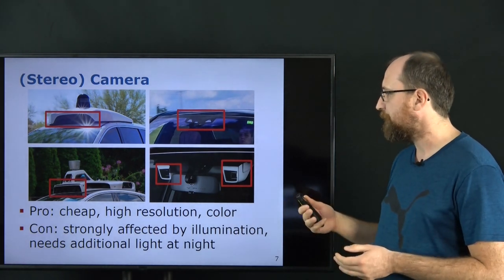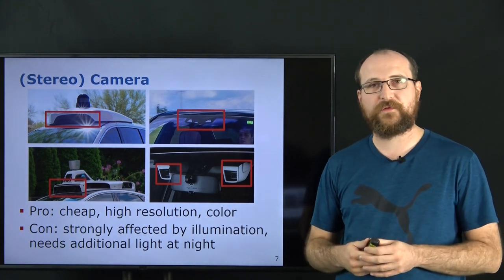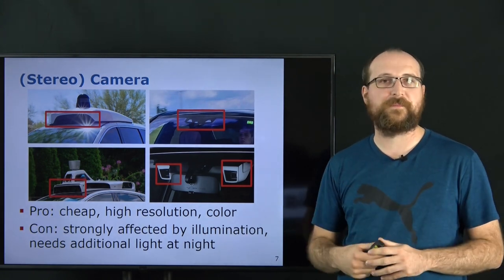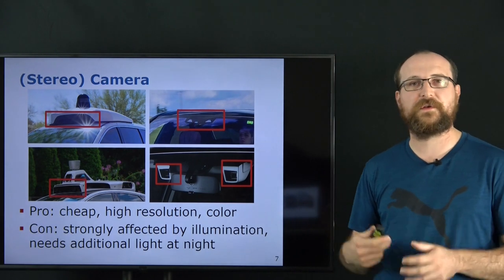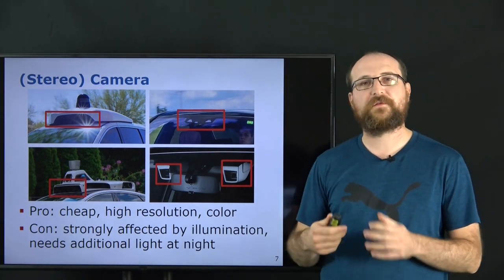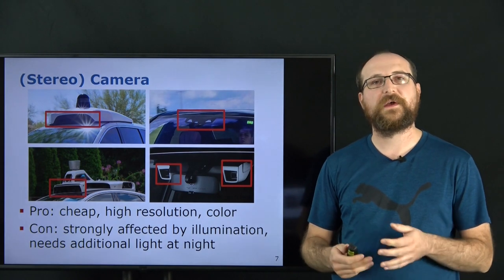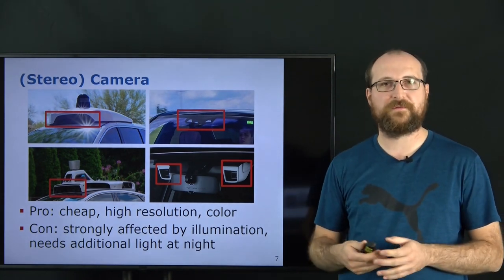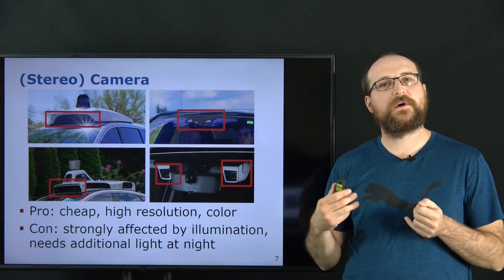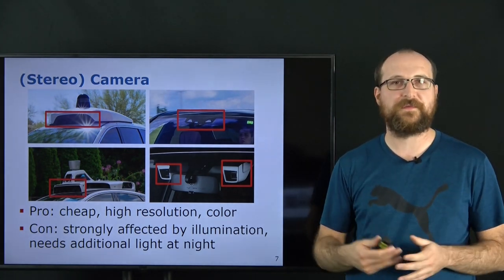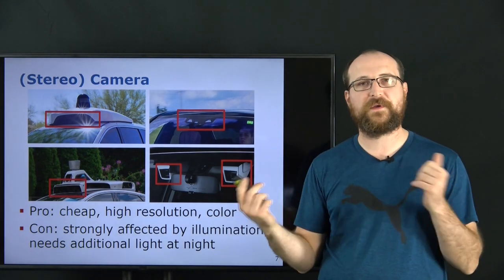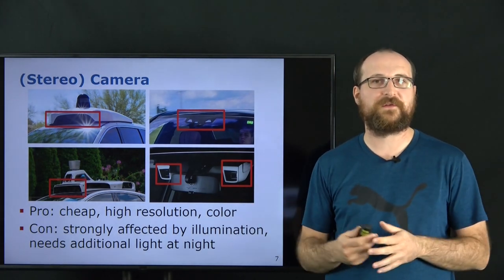The information from cameras is high resolution, giving a clear view of the environment with color information, which is very important for distinguishing different states of traffic lights. One disadvantage of cameras is that they are strongly illumination dependent — sunlight can blind the camera, and at night additional light is needed. Headlights help for forward-facing cameras, but sideways-looking cameras require light on the sides, which is a disadvantage.